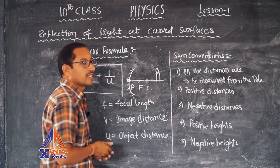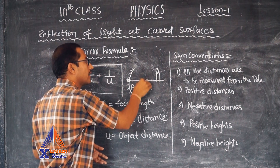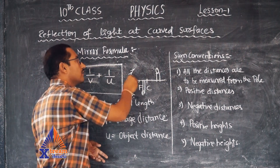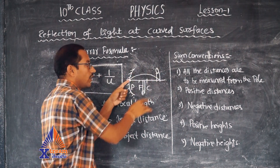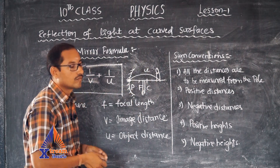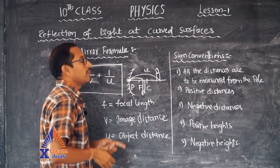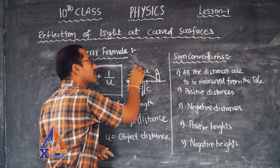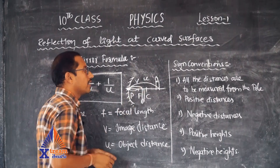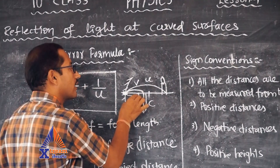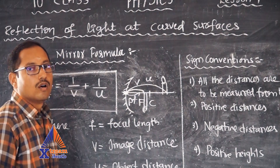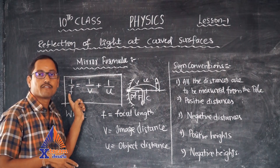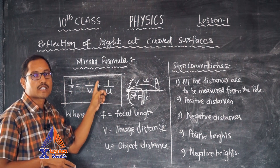If I place an object in front of the mirror, I will get an image at some point. The distance between the pole and the object is called object distance u. The distance between the pole and the image is called image distance v. The distance between the pole and the focus is called focal length f. If v and u are given, we can find f using the formula: 1/f = 1/v + 1/u.